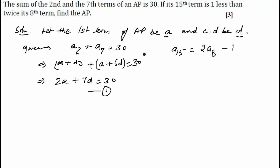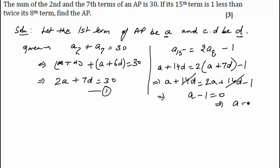Now we'll solve the second equation. a₁₅, so that will be a plus 14d equals 2 times (a plus 7d) minus 1. So a plus 14d equals 2a plus 14d minus 1. The 14d gets cancelled. Transposing: 2a minus a minus 1 equals 0. This gives us a equals 1.